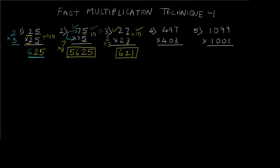That was the two-digit case. Now let's see how we apply this trick to a three-digit number. For question four, we take the combined units and tens digits of both numbers and their sum must be a multiple of 100 — that is 10 squared — rather than 10. The second condition remains the same: the hundreds digits must be equal. Here we have 4 and 4, so both conditions are satisfied.